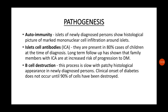Regarding pathogenesis, autoimmunity plays a role — islets of newly diagnosed persons show a histological picture of marked mononuclear cell infiltration around the islets. Autoantibodies can be found in many diagnosed persons. In some viral infections the person produces antibodies against the pathogen, but these accidentally destroy the pancreas and decrease insulin production.